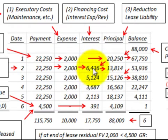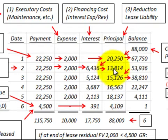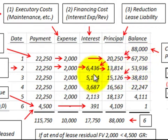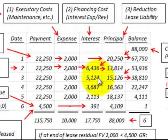To amortize the lease, we subtract the minimum lease payment of $20,250 from the $88,000 capitalized amount, giving a new balance of $67,750. Multiplying by 9.5% gives interest of $6,436. Subtracting $6,436 from $20,250 gives a principal reduction of $13,814. Note that the interest component plus the principal reduction always equals the minimum lease payment of $20,250. The next balance is $53,936, with interest of $5,124 and principal reduction of $15,126.